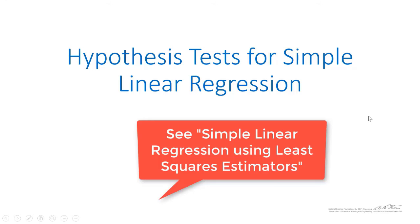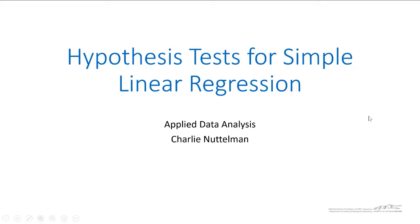In the previous screencast I showed you how we can calculate the slope and intercept using the least squared method for simple linear regression. I also showed you how we can calculate standard error and the standard error of our coefficients for slope and intercept. In this screencast I'm going to show you how we can use the standard errors of our slope and intercept to perform hypothesis tests on the slope and intercept for simple linear regression.